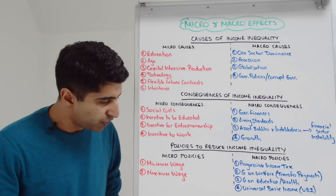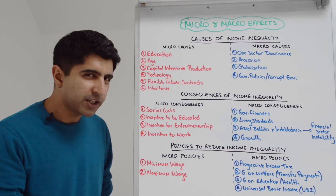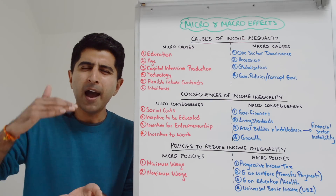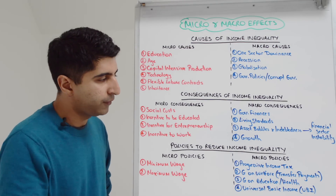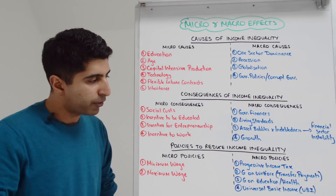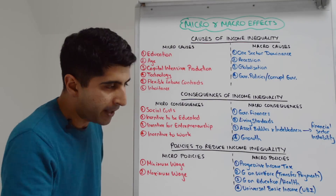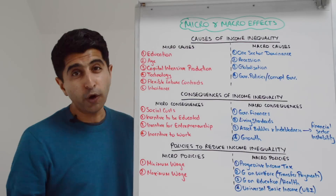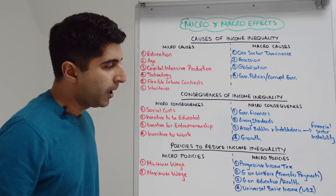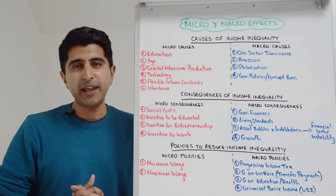Let's finish by looking at micro and macro policies to reduce inequality. On the micro side, direct regulations like minimum wage and maximum wage controls impact strongly within the labor market — very clearly micro policies. On the macro side, under fiscal policy: progressive income taxation, or making an existing system more progressive; government spending on benefits and welfare (transfer payments); government spending on education and health; and even universal basic income — a significant form of government spending and therefore a macro policy.